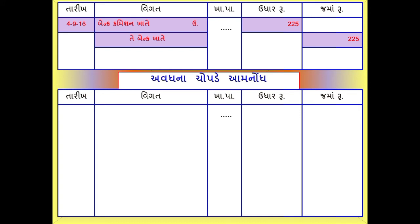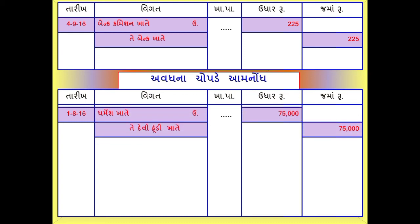હવે ત્યારબાદ આગળ વધીએ, અવધના ચોપડે આમ્નોંધ તૈયાર કરીએ. તો એક આઠ સોળના રોજ ધરમેશ ખાતે જમા કરશે, અને આ હૂંડી ધરમેશ લેનાર છે, તેથી ધરમેશ ખાતે ઉધાર. હૂંડી વસૂલાત માટે મોકલે ત્યારે અવધને કોઈ લેવાદેવા નથી. પાક્યા તારીખે આ હૂંડી નકારાય ત્યારે જ અવધના ચોપડે આમ્નોંધ તૈયાર કરવાની - ચાર નવ સોળના રોજ.